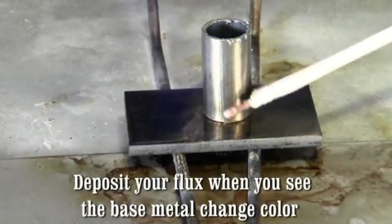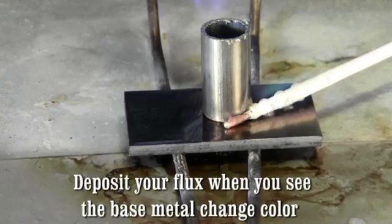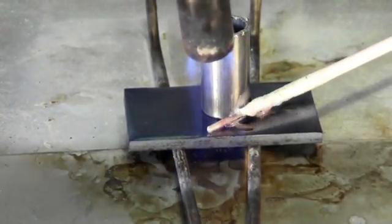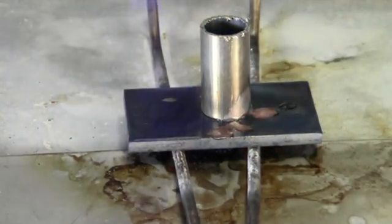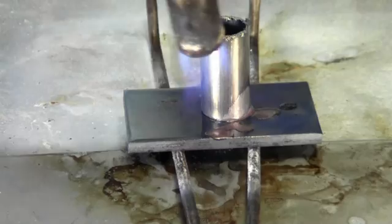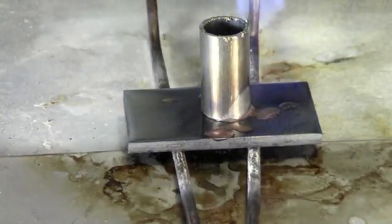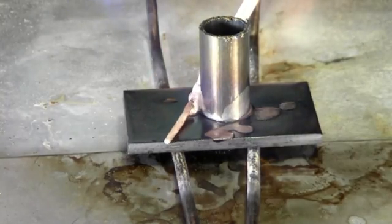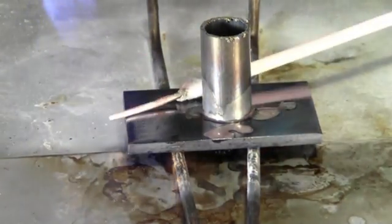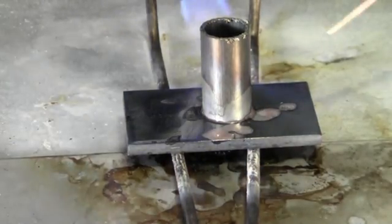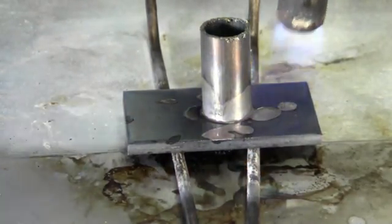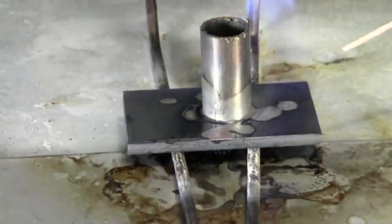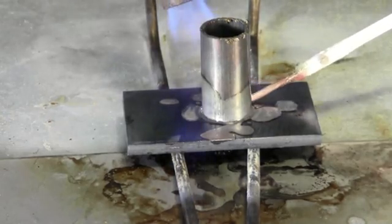We're getting there. We'll put a little bit of flux on here. Just watch your flux when your flux is active. There we go. You can actually see the flux cleaning the base metal. We're going to add a little bit of rod to the back side of this.